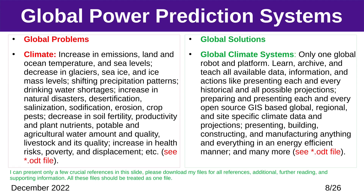Global Problem — Climate: increase in emissions, land and ocean temperature, and sea levels; decrease in glaciers, sea ice, and ice mass levels; shifting precipitation patterns; increase in natural disasters, desertification, salinization, sodification, erosion, crop pests, etc. Global Solution — Global Climate Systems: learn, archive, and teach all available data, information, and actions, including each and every historical and possible projection; prepare and present open-source GIS-based global, regional, and site-specific climate data and projections, and many more.